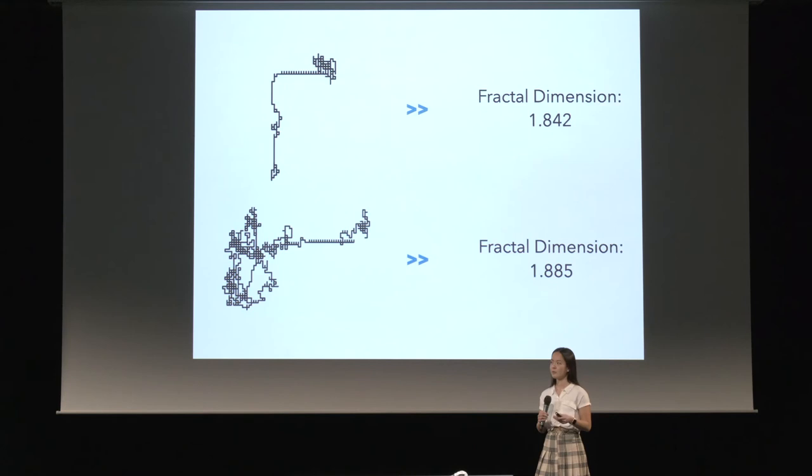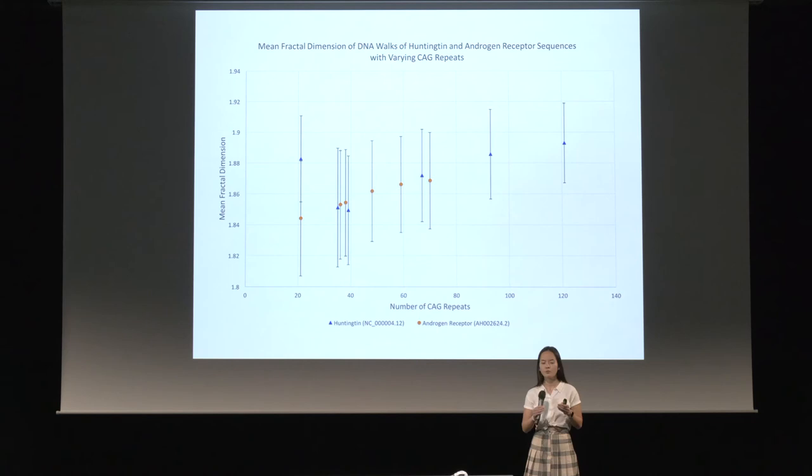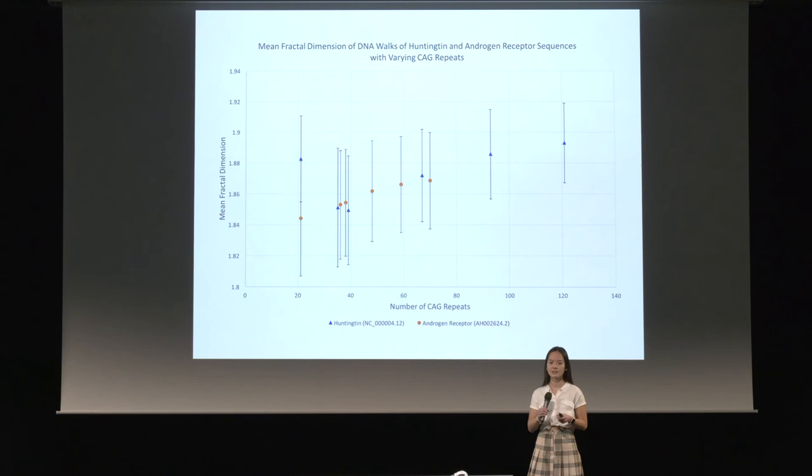This is really cool because it can now give us a unique value for each DNA walk. More interestingly, we find that for sequences with more CAG repeats, the fractal dimension increases too, and this is the case for both polyglutamine diseases I studied.